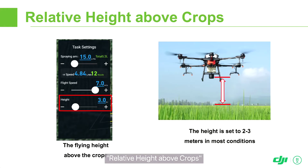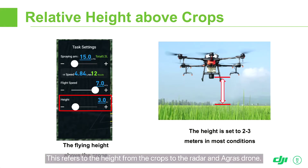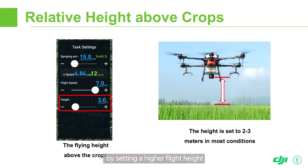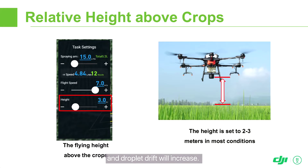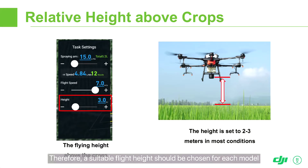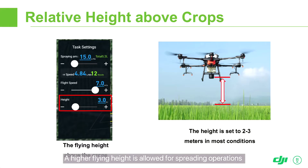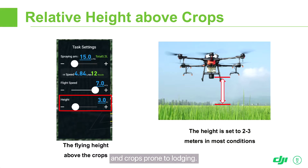Relative height above crops refers to the height from the crops to the radar and agri-drone. It determines the spraying width and the downward wind field. Although you can increase the spraying width to a certain extent by setting a higher flight height, the downward wind field of the droplets will decrease and droplet drift will increase. Therefore, a suitable flight height should be chosen for each model based on your actual needs. For T-Series Agri drones, a height of 2–3 meters is generally recommended. A higher flying height is allowed for spreading operations and crops prone to lodging.